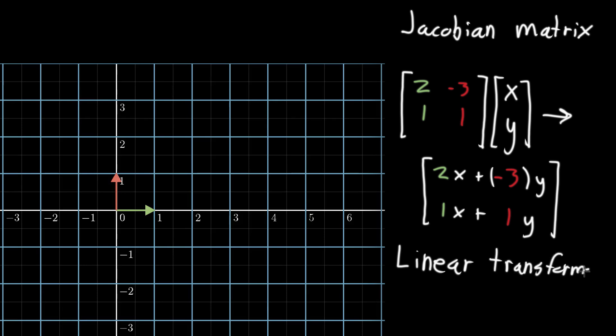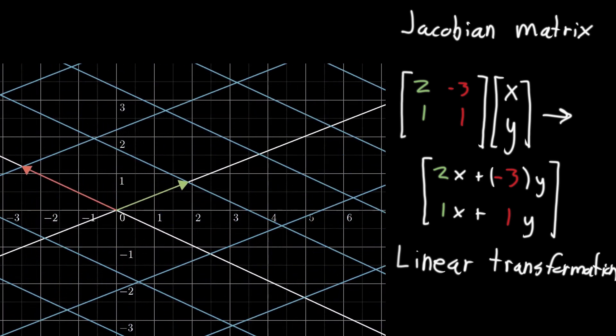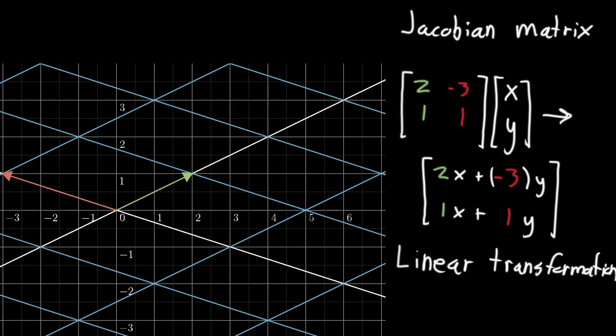What I'm going to do is just show you what this particular transformation looks like on the left here. Every single point on this blue grid, I'm going to tell the computer: if that point was (x, y), I want you to take it to (2x + (-3)y, 1x + 1y). And here's what it looks like. Let me just play it out here. All the points in space move, and you end up in some final state here.